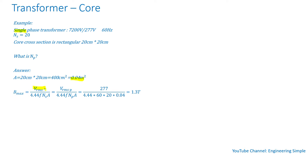The cross-section area is 20 cm × 20 cm = 0.04 meters squared. The flux density is calculated as V_rms of the secondary divided by 4.44 times frequency times number of turns in the secondary times the cross-section area of the core. Note that I must use the secondary voltage and the secondary number of turns to be consistent. Plugging in the numbers gives 1.3 Tesla.